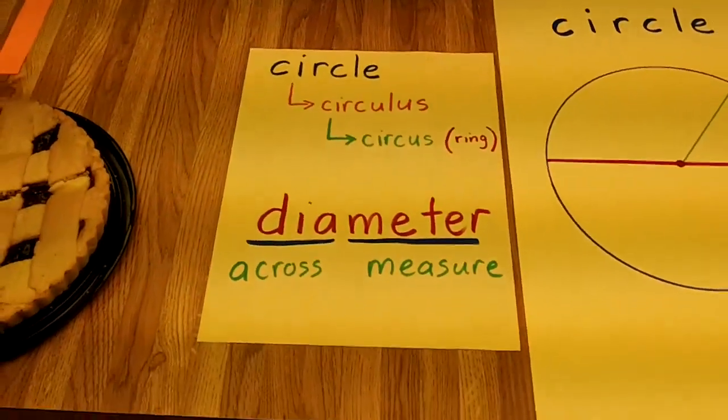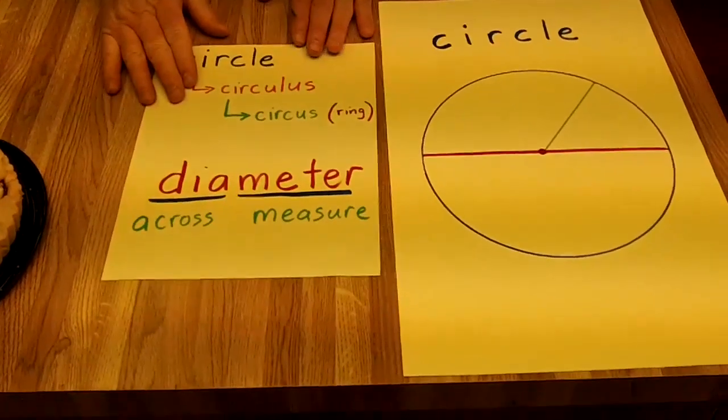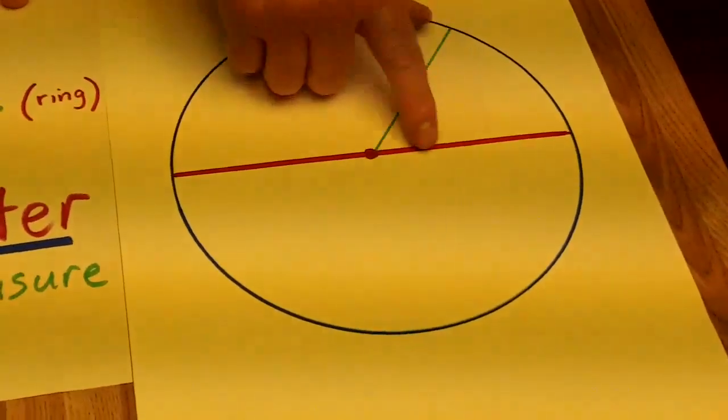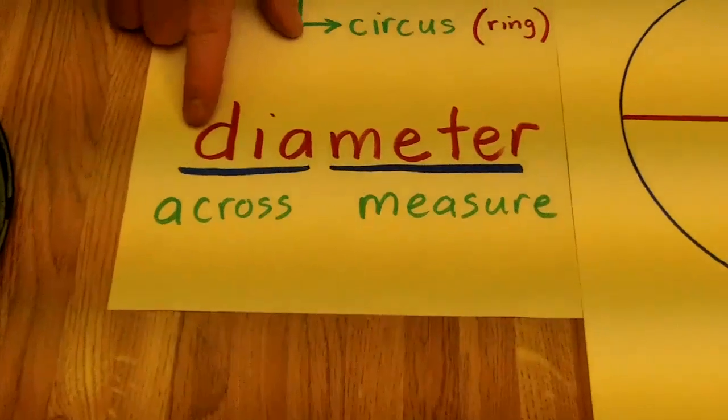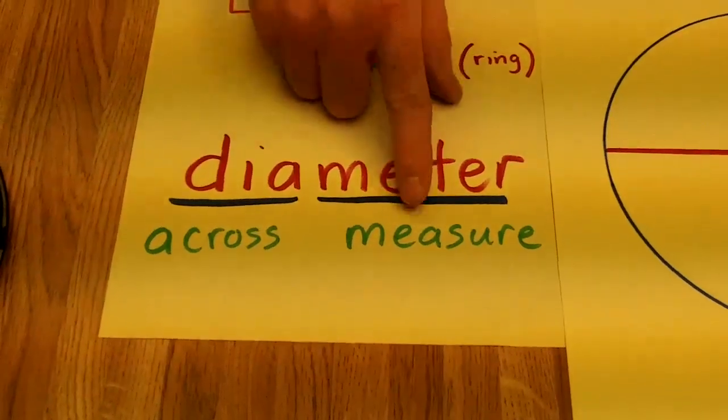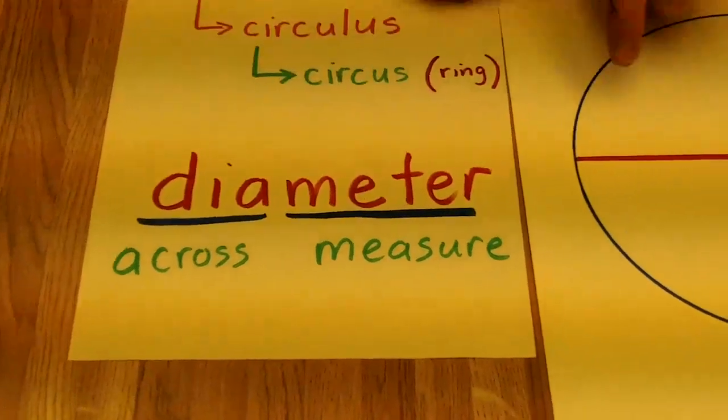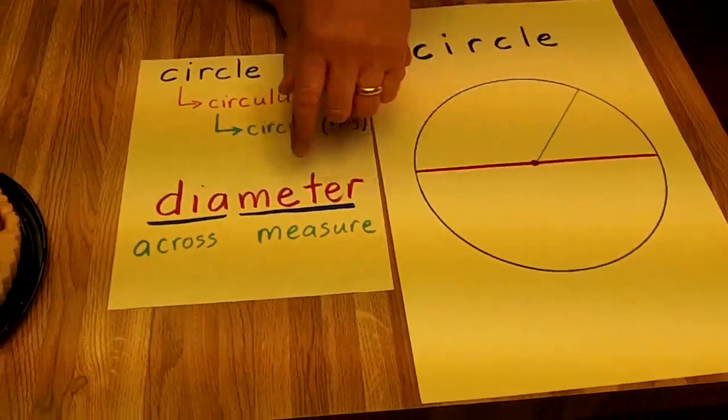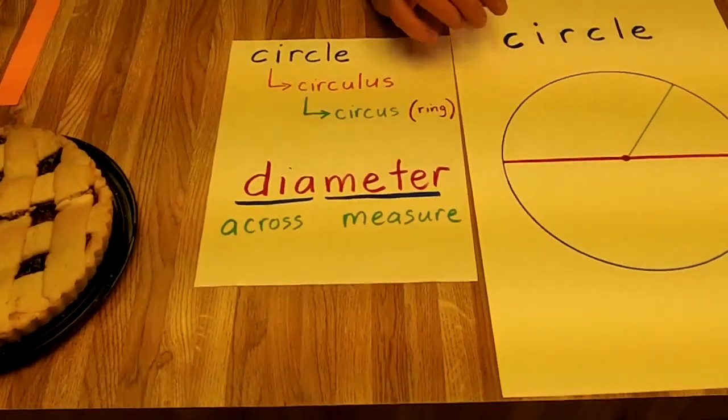All right. Now, the Greeks, they gave the name to the middle line, diameter. Now, dia means across, and meter means to measure. So, the Greeks said, to measure a circle across is called a diameter.